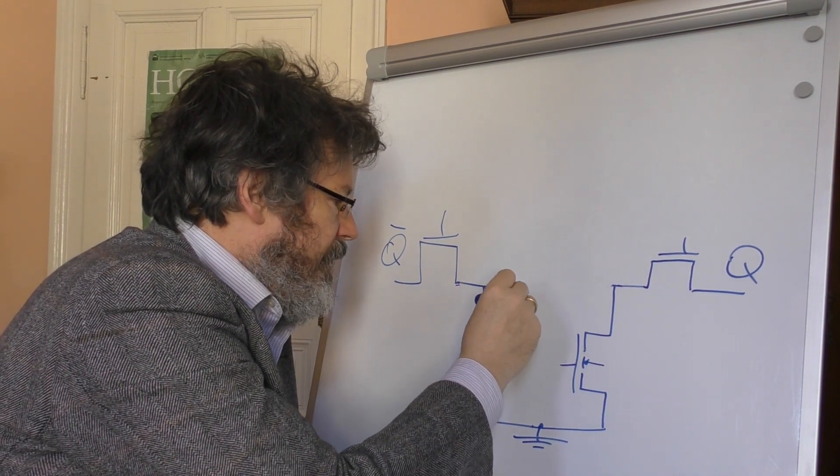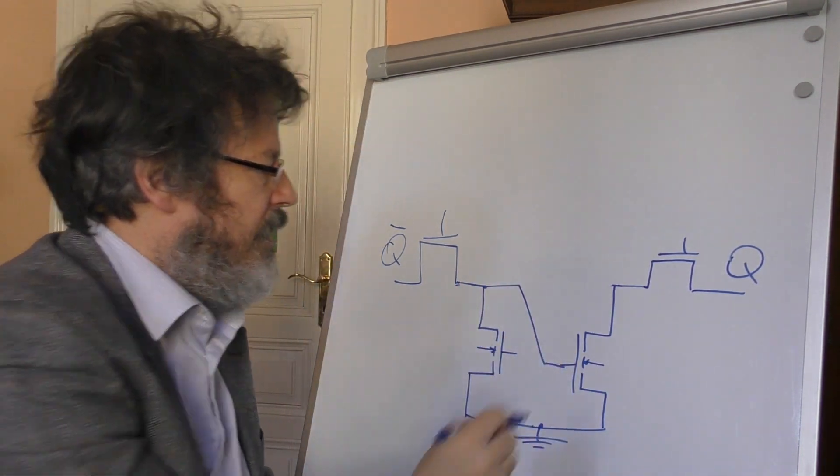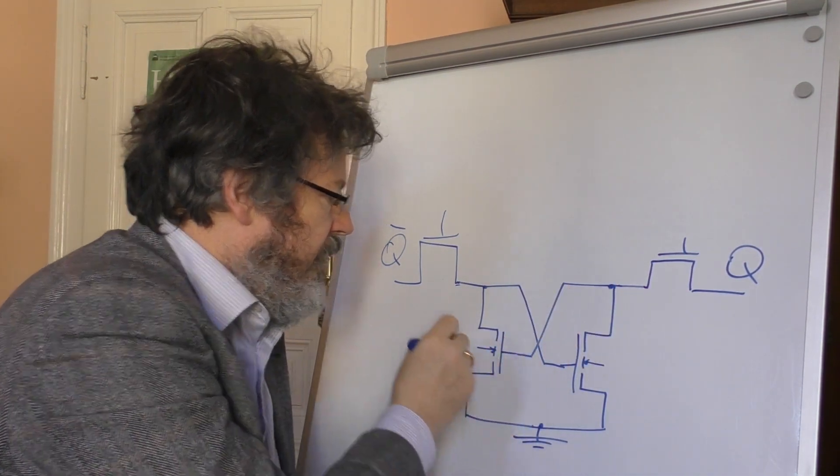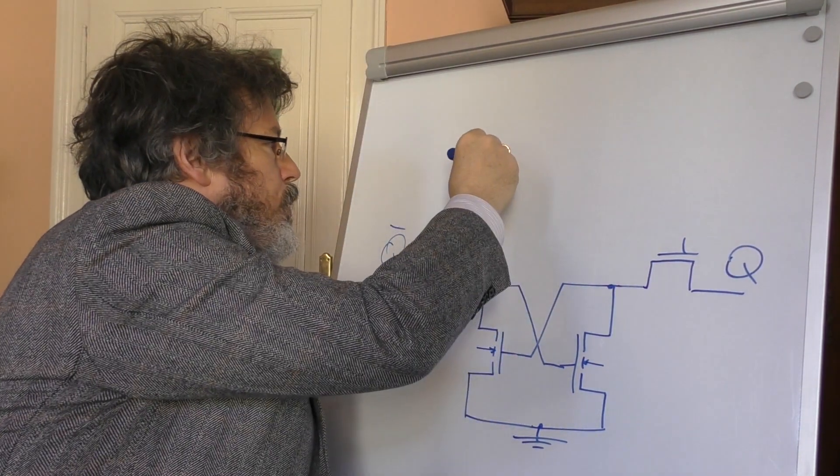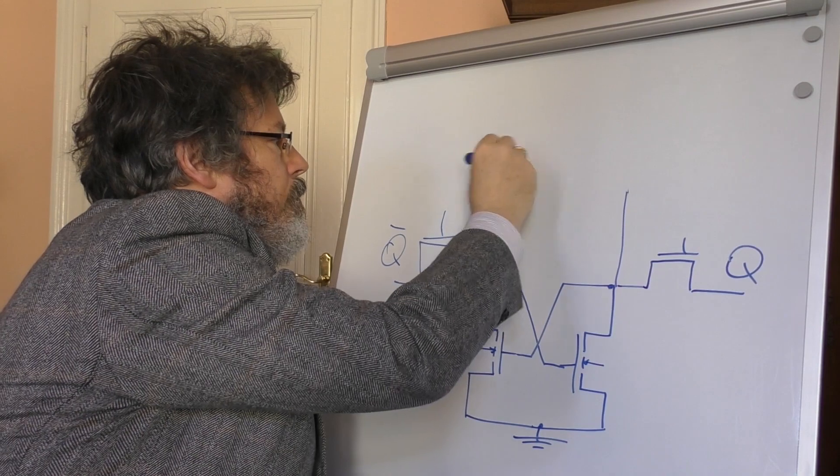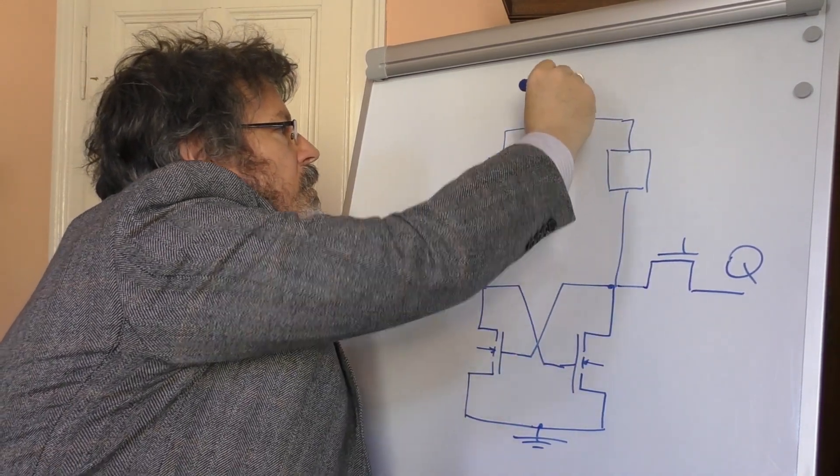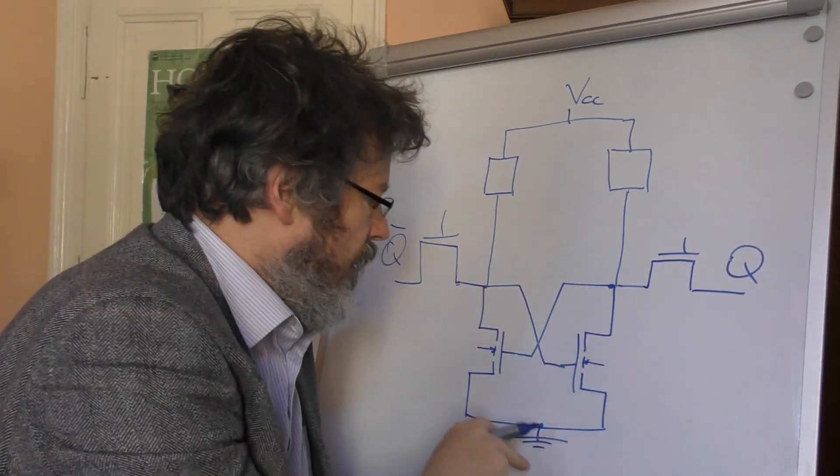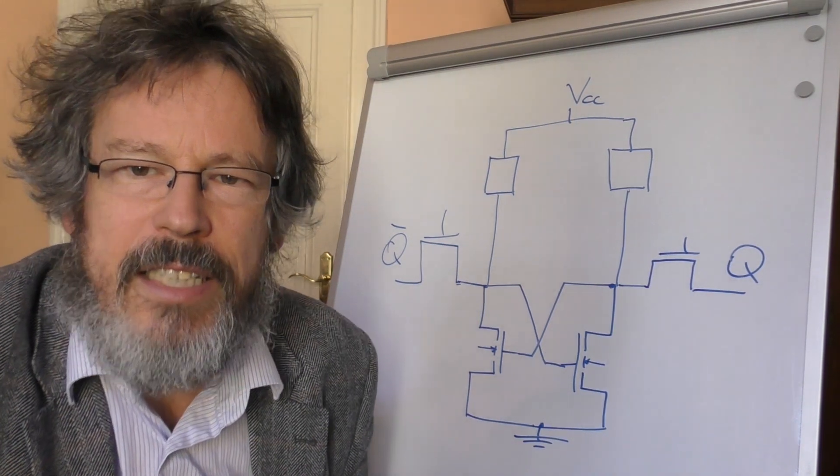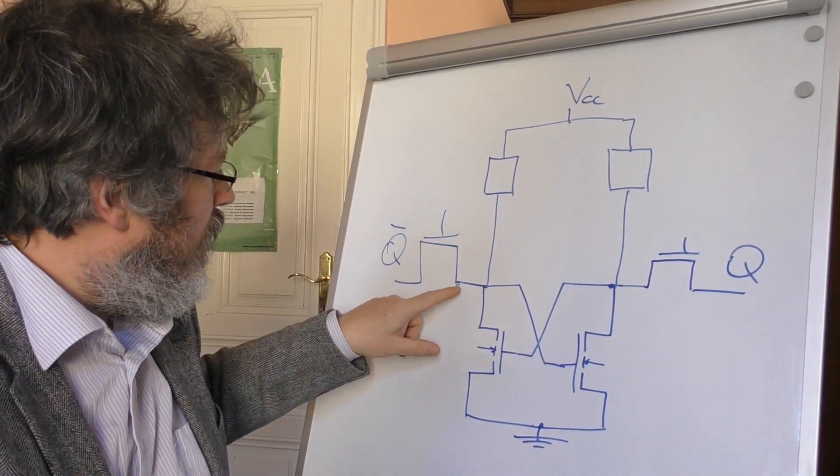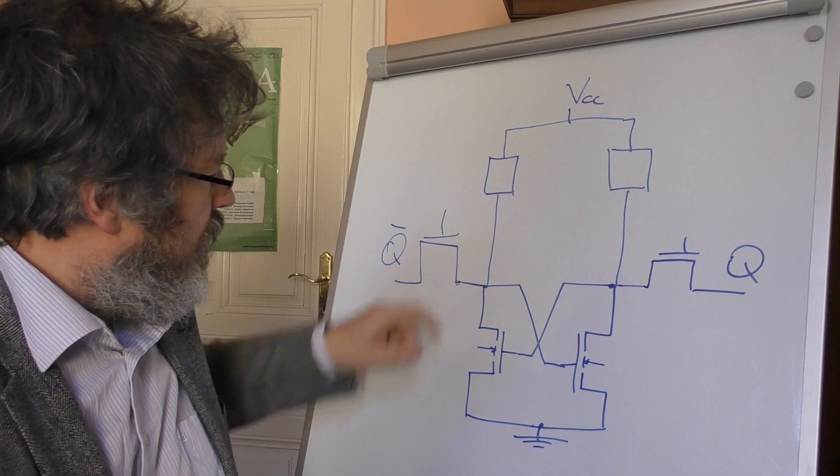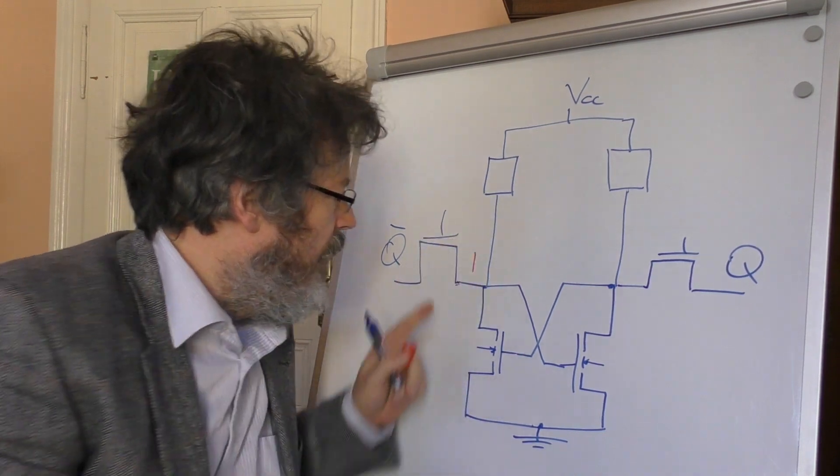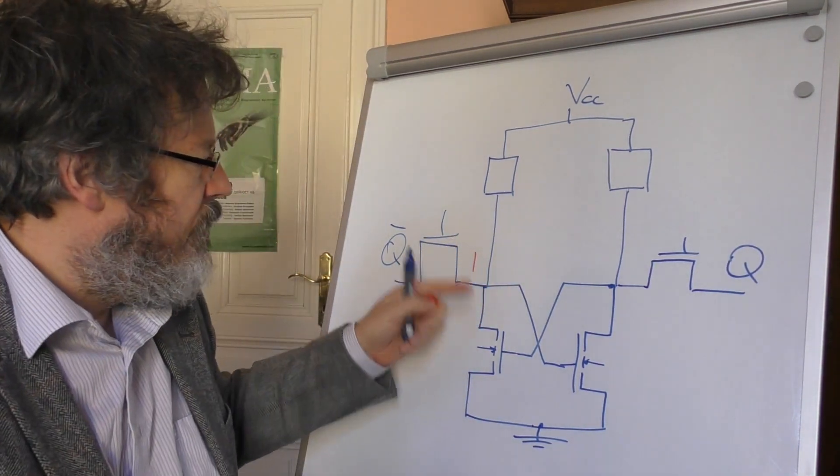And another NMOS transistor on this side at the gates respectively. And the idea is now as follows: I take what is applied to this input here and route it to the gate of this transistor, and what is applied to this input I route to the gate of this transistor. Then we need to connect the whole thing upward via ohmic resistors to the supply voltage VCC, as it's typically abbreviated. We have 0 volts down here, we have 5 volts up here, and now let's see what happens.